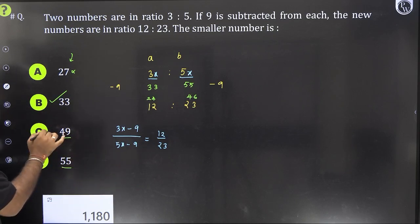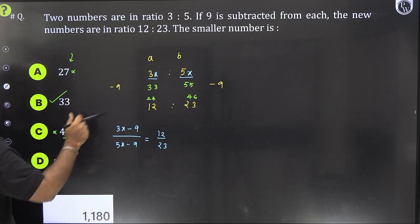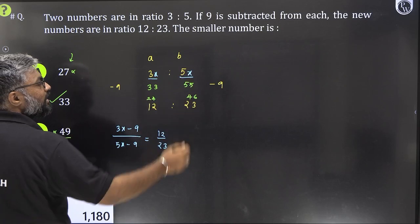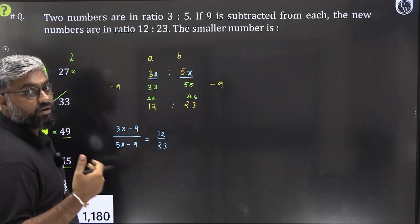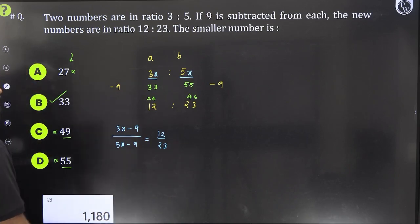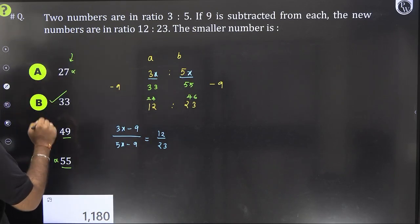Fortunately, we didn't even have to try these. Yeh humein try bhi karne nahi pade but agar hota bhi to they would not form integers. 49 agar 3x hai, agar 3x 49 hai to 5x kya hota? 49 by 3 into 5. 49 by 3 would give you a non integer number.